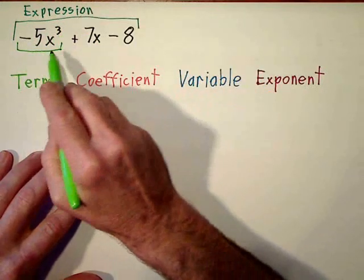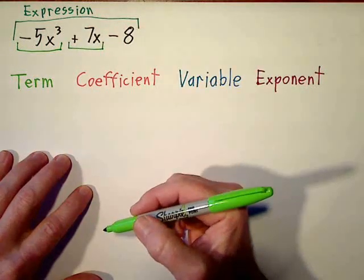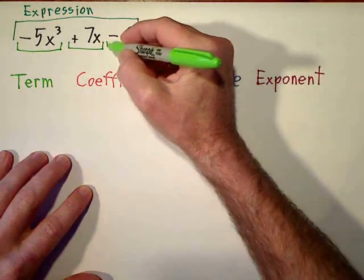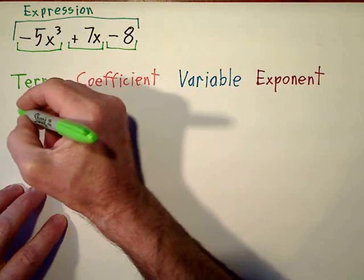So negative 5x to the third is a term, positive 7x is a term, and negative 8 is a term. Let's go ahead and write each of our terms.